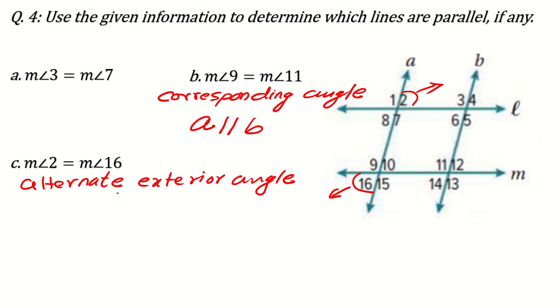So alternate exterior angle. So they are equal means line L will be parallel to line M, because 2 is the part of line L and 16 is the part of line M, and A is working as the transversal, this line.